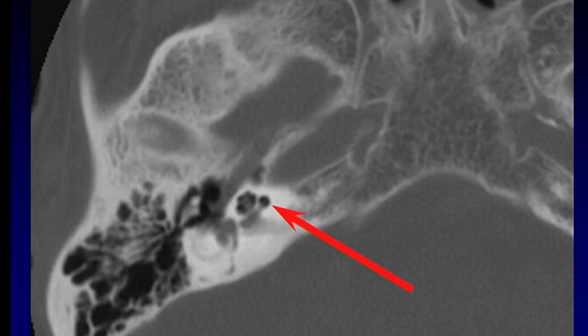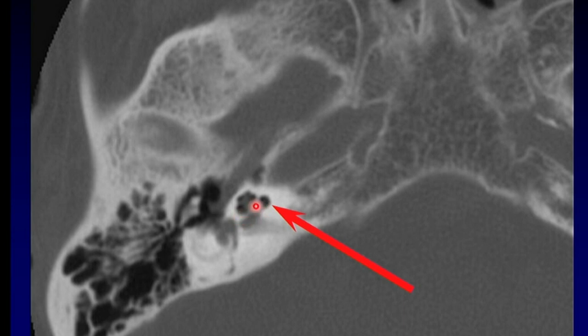One other important thing to look for in otic capsule violating fractures is to make sure you haven't had leak of the endolymph and perilymph out of the inner ear with replacement of gas from the middle ear. This is a perilymphatic fistula. If you see gas in the cochlea or vestibule, that's indicative of a perilymphatic fistula, which is a very severe complication of these otic capsule violating fractures.